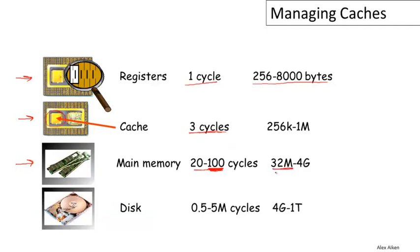Finally, furthest away is typically disk. This takes a very long time to get to: hundreds of thousands or millions of cycles.